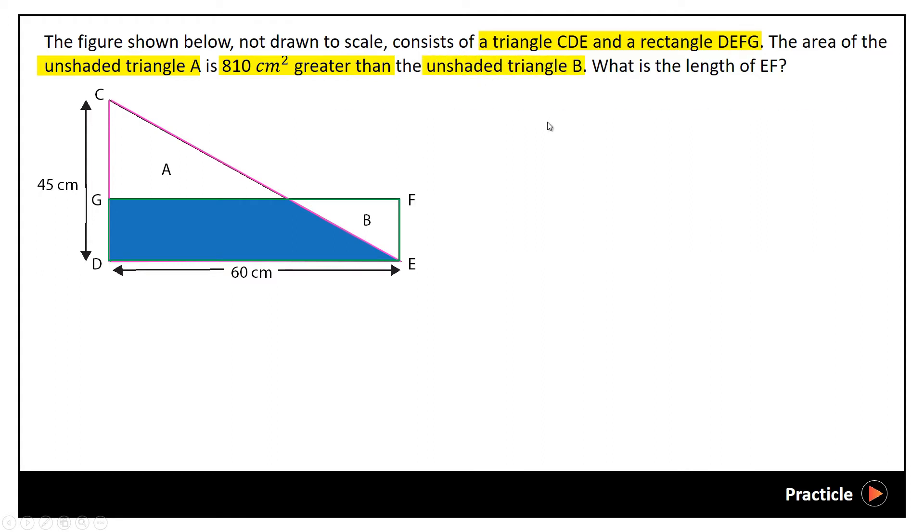So what this means is that if we were to take the area of the unshaded triangle B plus 810 square centimeters, this would give us the area of unshaded triangle A. And then we are asked to find the length of EF. So if we were to look at the figure, EF is actually the base or the height of this unshaded triangle B, or it can also be the breadth of the rectangle DEFG.